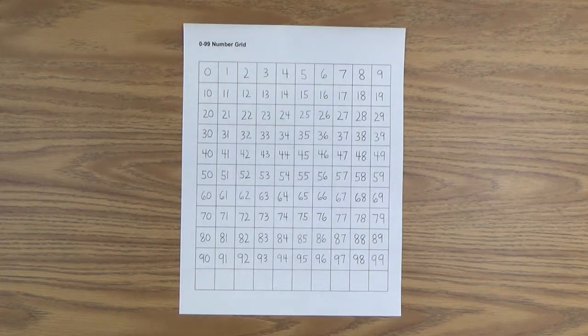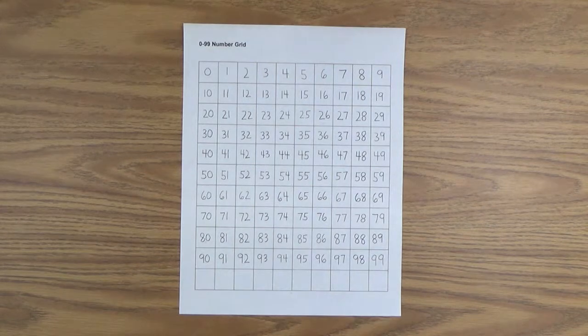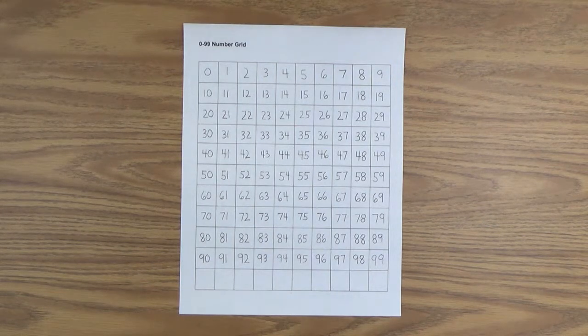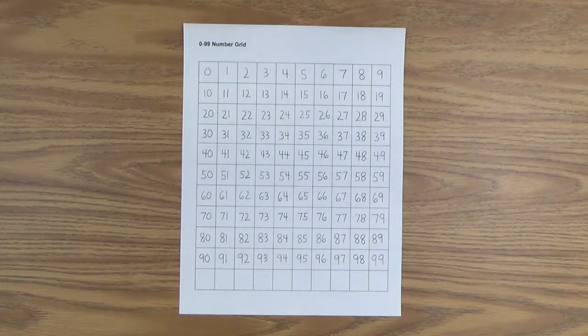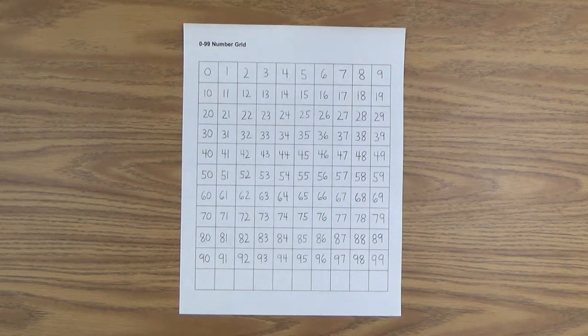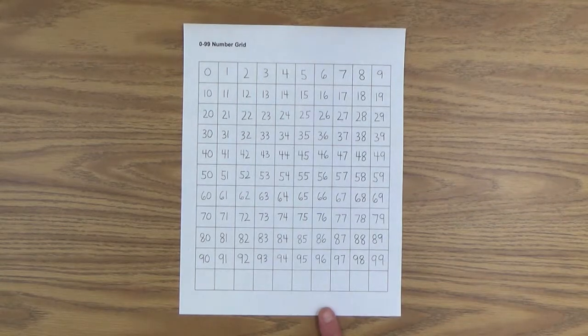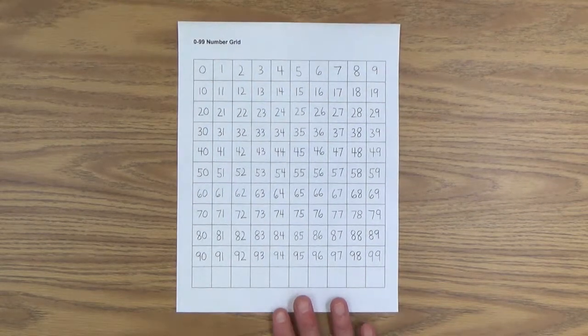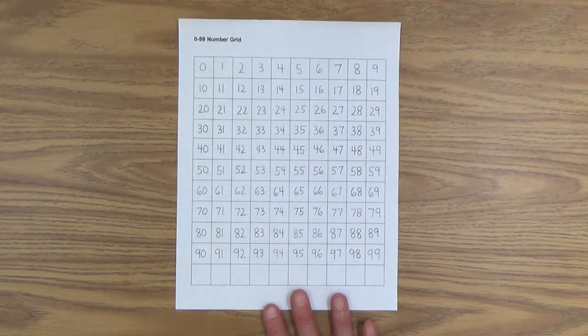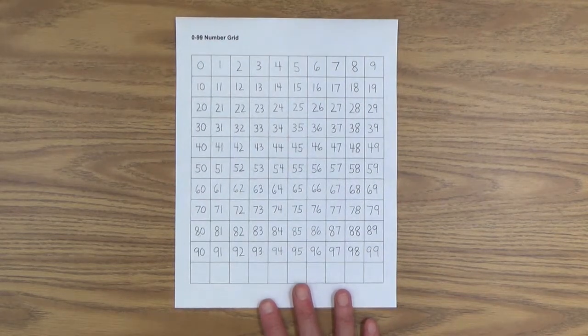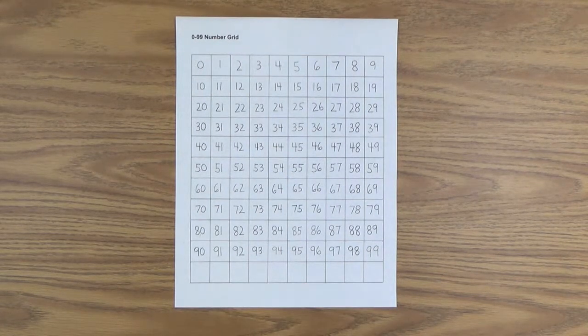And now here is the zero to 99 number grid. You go back to what we just did there, where we took the number line and stacked it. This should look very similar. All I've done here is I've shrunk it down. And other than that, it's pretty much the same thing.